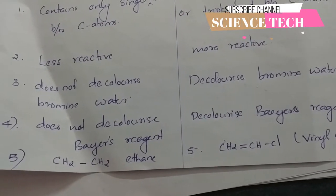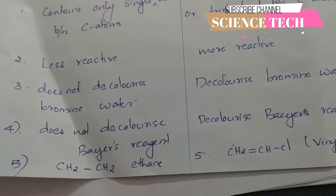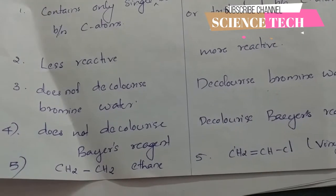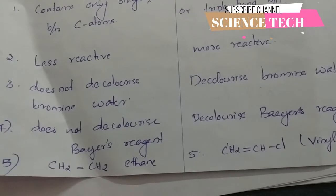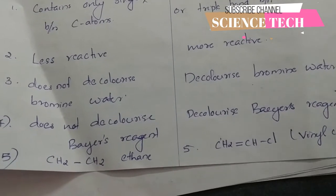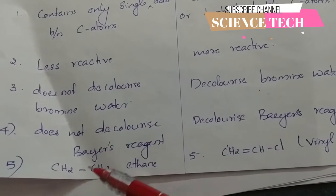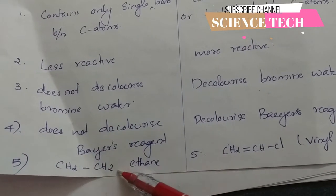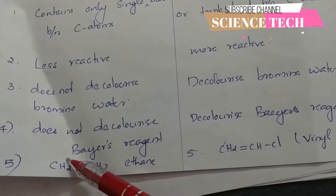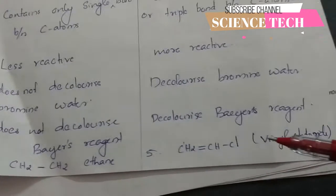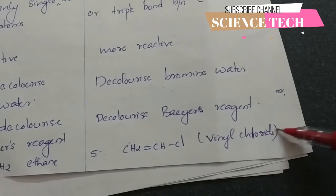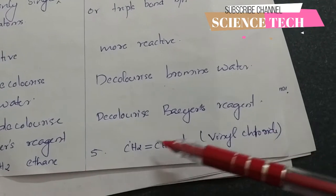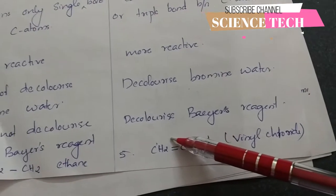In the chemistry lab, we use unsaturated compounds to demonstrate the decolorization of bromine water. As an example, a saturated compound contains carbon-carbon single bonds, while an unsaturated compound contains functional groups with double or triple bonds.